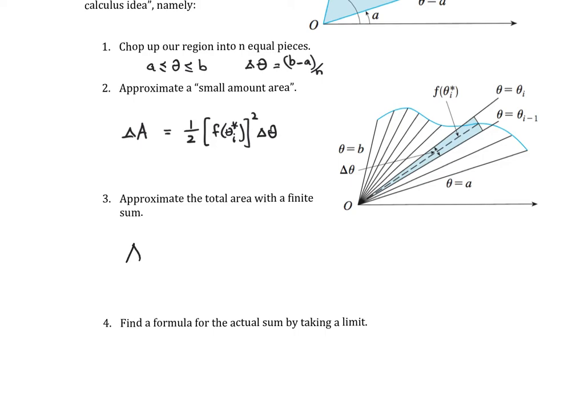Our area is approximately equal to the finite sum as i goes from 1 to n of areas of sectors, which we just calculated. That's one half quantity f of theta sub i star, some sample point inside our interval, squared delta theta.